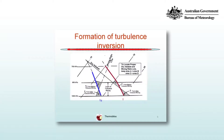We can calculate what the new temperature and dew point temperature lapse rates are for a given layer of turbulent mixing using the equal area method. For the temperature profile, we choose a dry adiabatic where the areas to the left and right of that dry adiabatic are equal — so areas A and B.